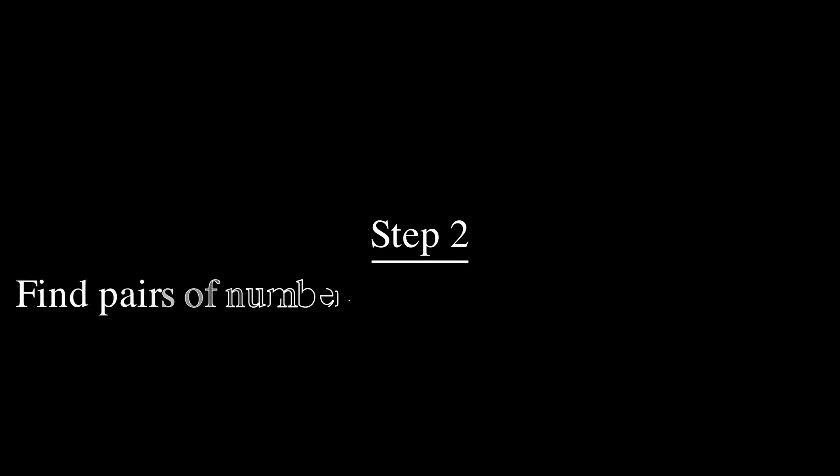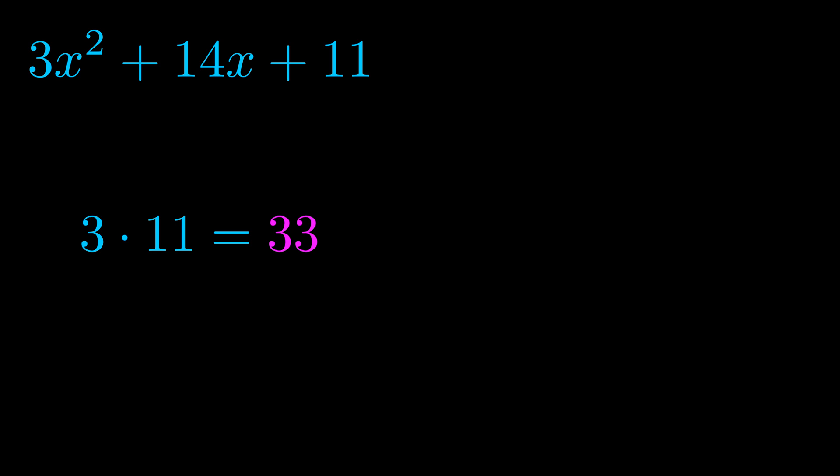Step two is to try to find all of the pairs which multiply to this number. Now it turns out you don't really need to find all of them but go ahead and write down as many numbers as you can that multiply to the magenta value for now. Pause the video and resume when you're ready to continue.